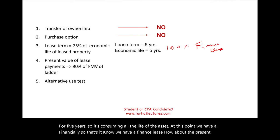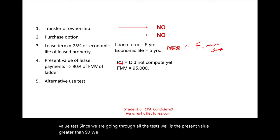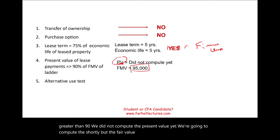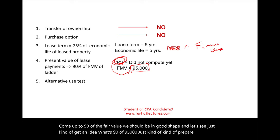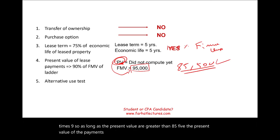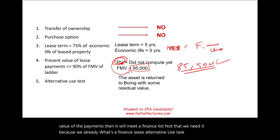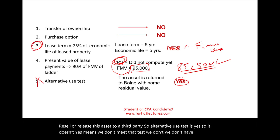Going through the remaining tests: for the present value test, 90 percent of the ninety-five thousand fair value equals eighty-five thousand five hundred. As long as the present value of payments exceeds that threshold, this test is also met. For the alternative use test, Boeing can resell or re-lease the asset to a third party — so the alternative use test is met as well, confirming a finance lease. We don't need all five tests since we already met the 100-percent-of-economic-life condition.